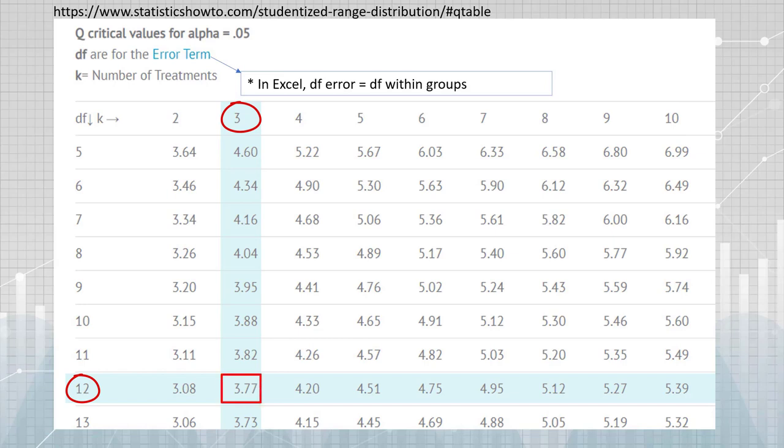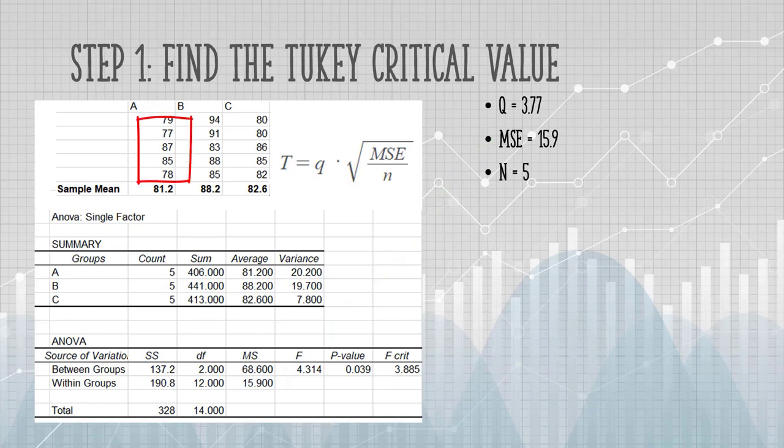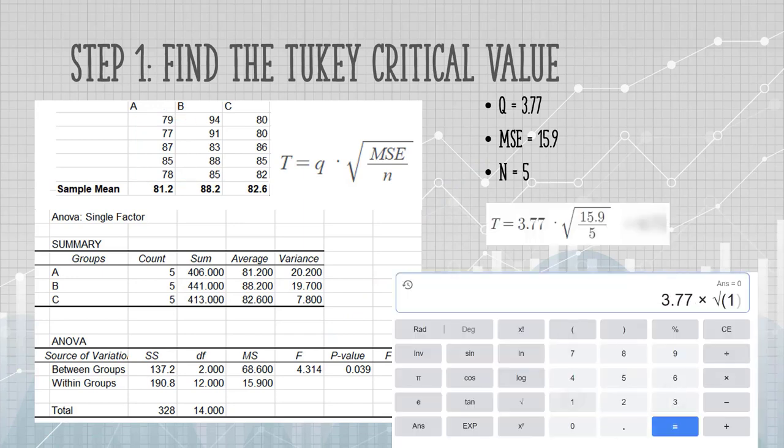Our Q value is 3.77. The next piece of information we need is mean square. Again, that's for the error term, or in Excel, within groups. Our ANOVA output tells us that the mean squared error is 15.9. N is the number of items in one group, that's 5. When I work this out on a calculator, I get 6.72. And that's our Tukey critical value.